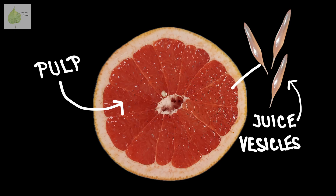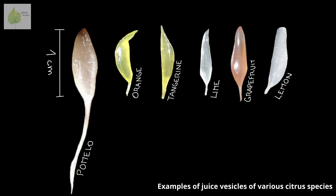So what we're really after when we're consuming a citrus fruit is its pulp or juice. In fact, the pulp consists of many small sacks called juice vesicles. They're pretty consistent in shape, mostly elliptical and with a short stalk that attaches them to the membrane.